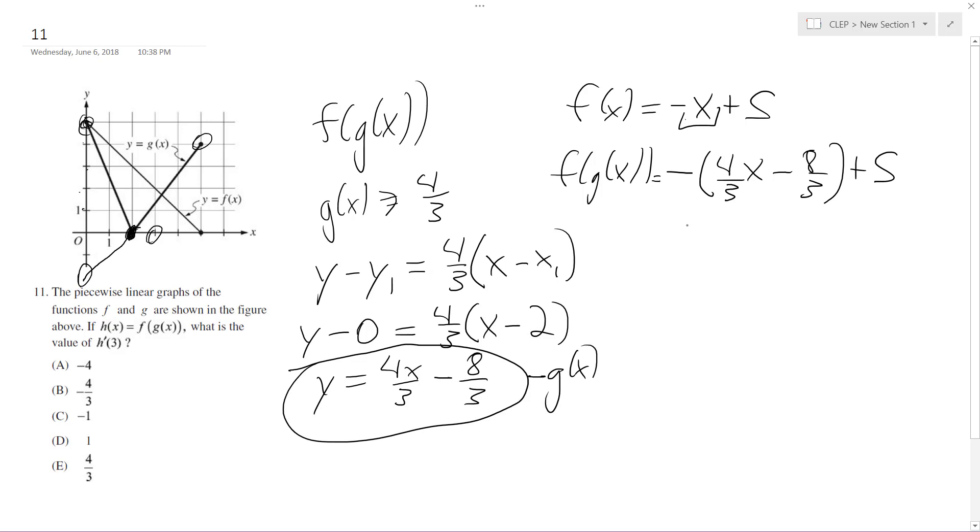I don't have to worry about getting this too perfect, so negative 4 thirds x plus 8 over 3, and this would be 15 over 3. You can add these - I'll just do 23 over 3,